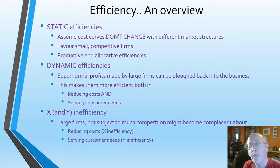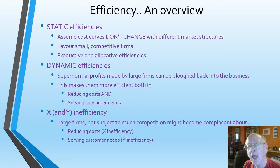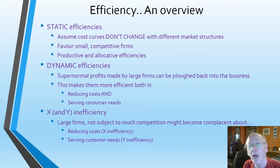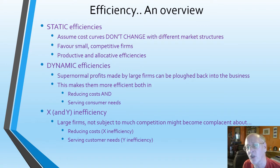We're going to be splitting this video into three different types of efficiency. First of all, there are static efficiencies. A static efficiency is where when a market changes its structure — say going from monopoly to being opened up into competition — we assume that its cost curves do not change, so they are completely static. The arguments there tend to favour small firms that are competitive and forced to look to their costs and customers to remain efficient.